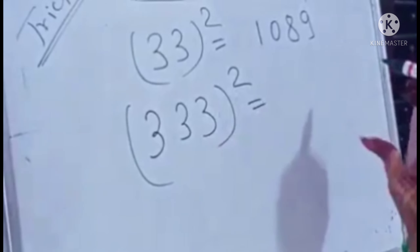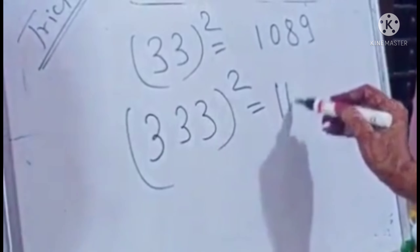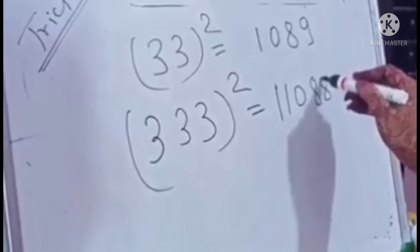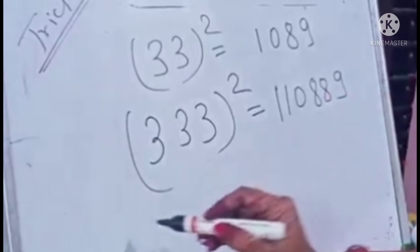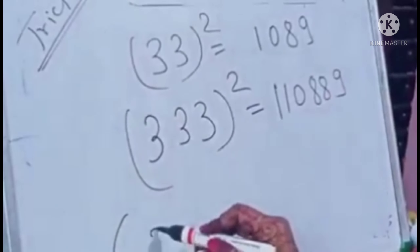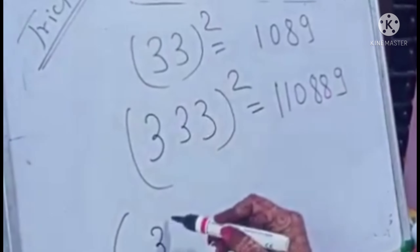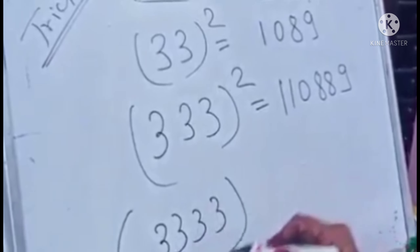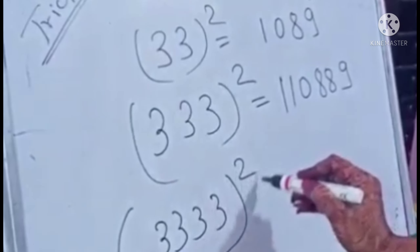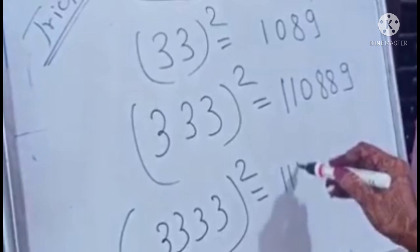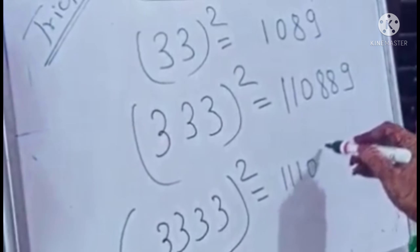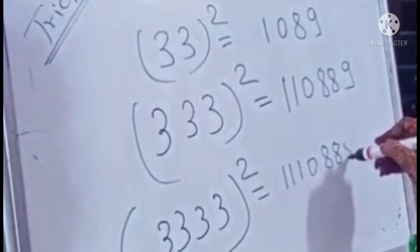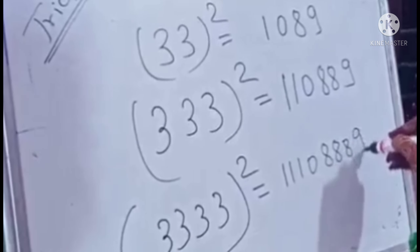Now trick number 2. We have to multiply with 5. I have written here the number 24688. And we have to multiply by 5. So what is the trick? Guys, I have written here multiplication, but we actually have to divide. So how can we divide? Just look here — we divide by 2.